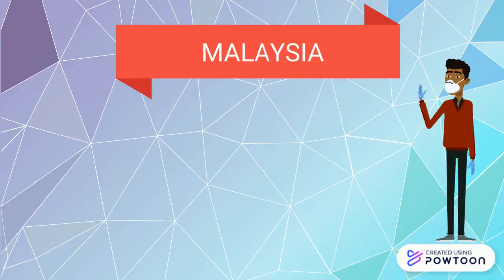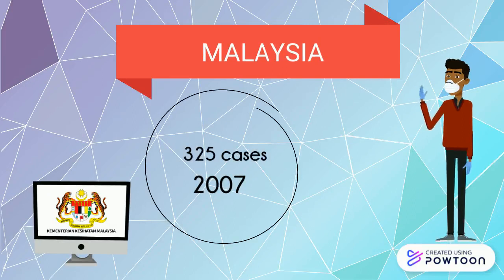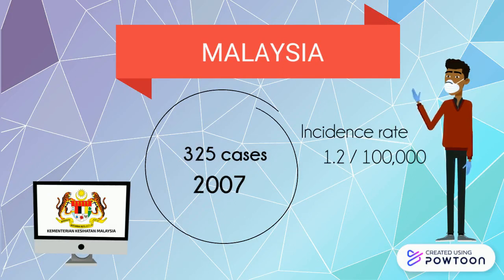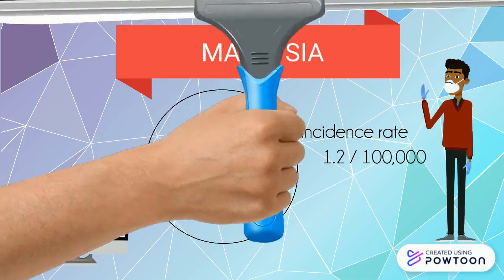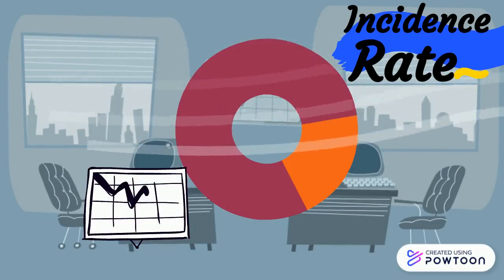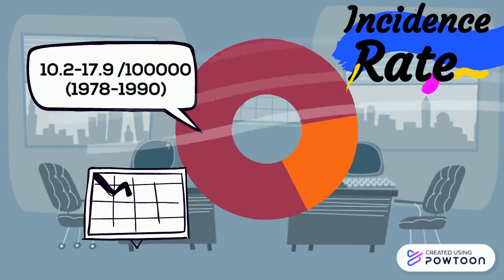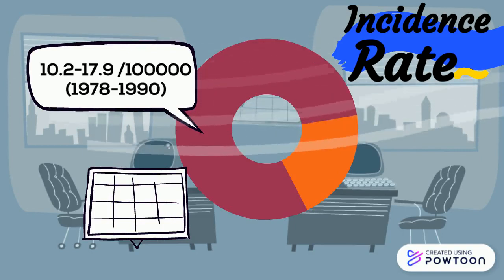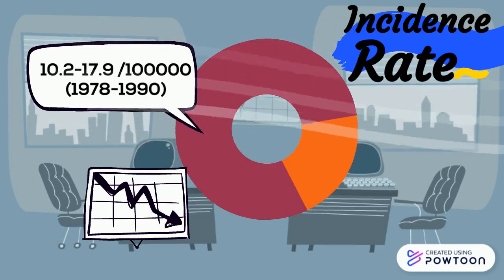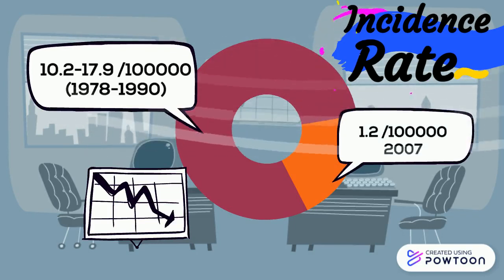Based on the Ministry of Health Malaysia website, Malaysia reported a total of 325 cases in 2007 with an incidence rate of 1.2 per 100,000 population. Age-standardized incidence rates declined from 10.2 to 17.9 per 100,000 persons in 1978 to 1990, to 1.2 per 100,000 person years in 2007.